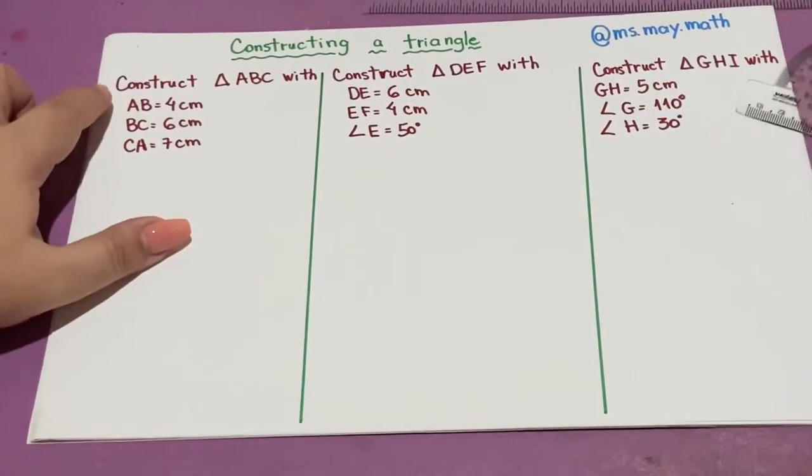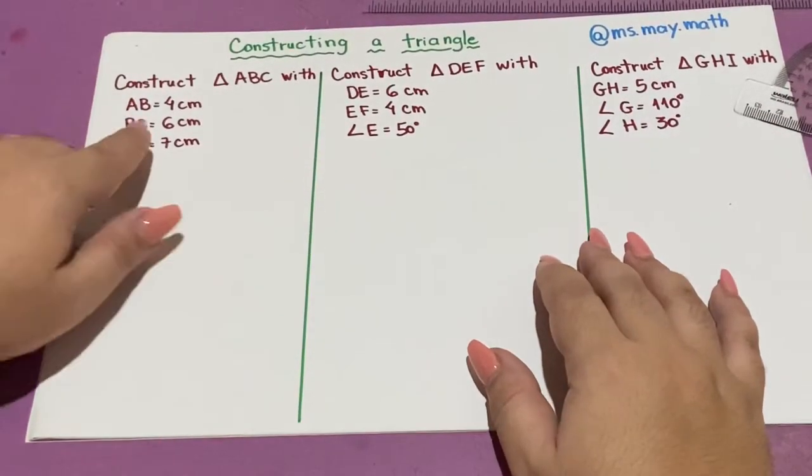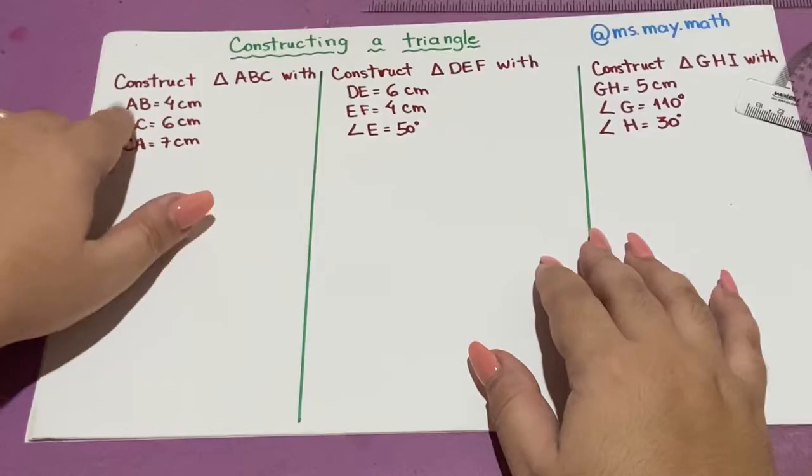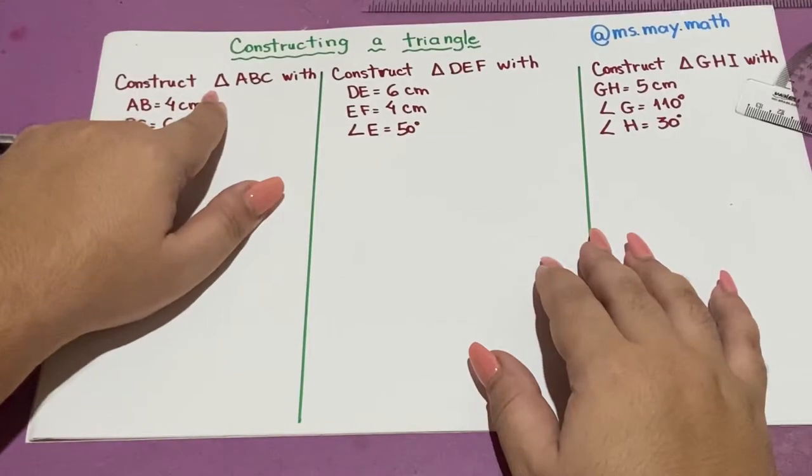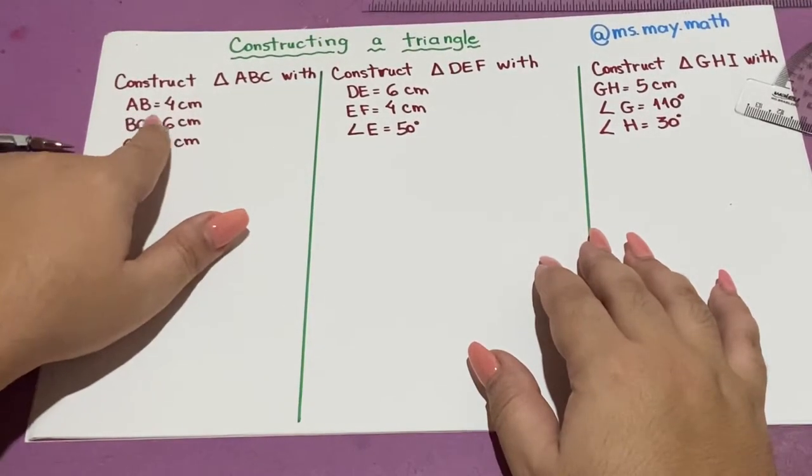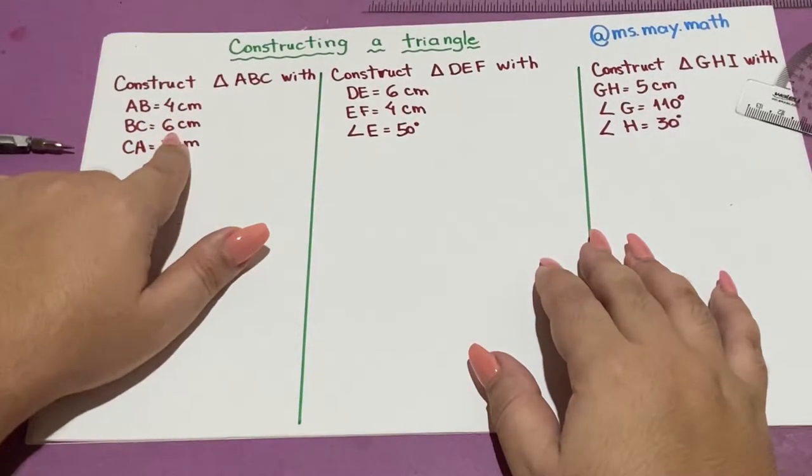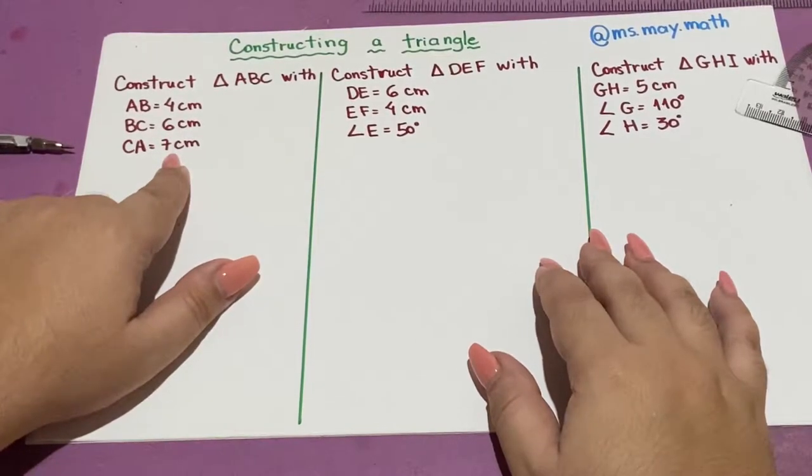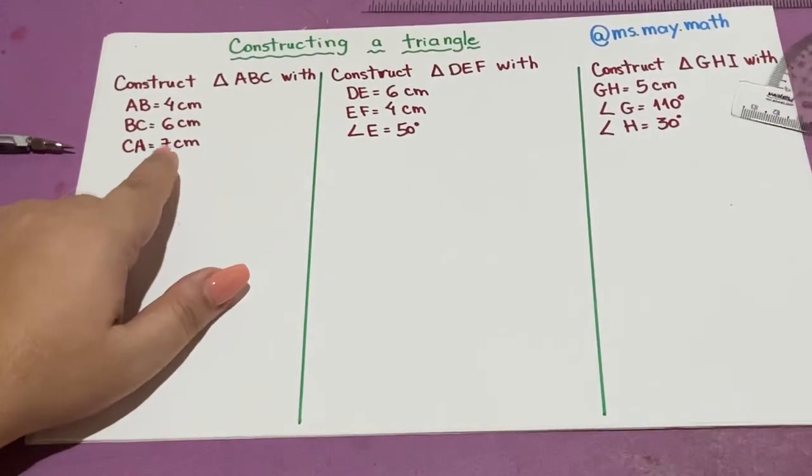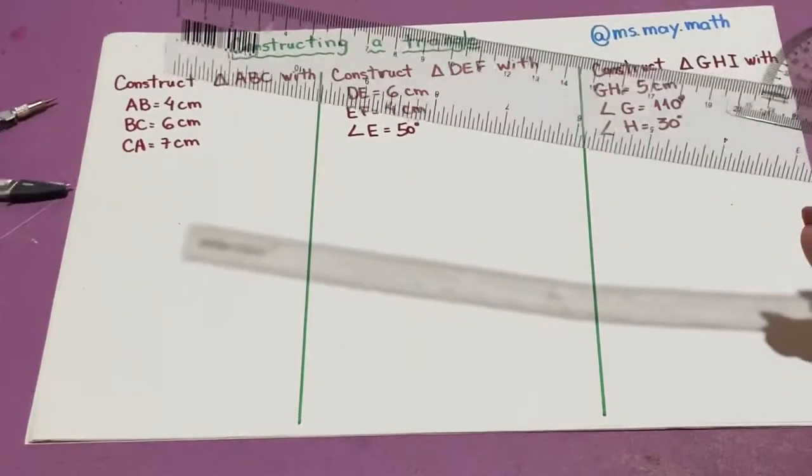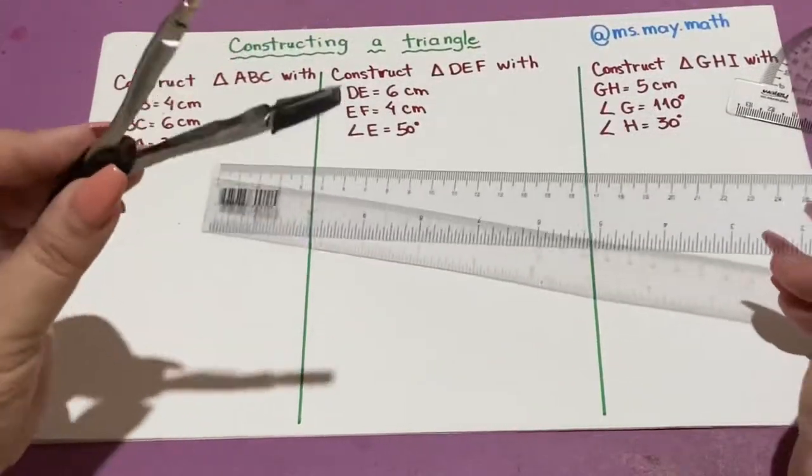The first one is when you have the three sides given. In this case, I have to construct a triangle ABC with the sides 4 centimeters, 6 centimeters, and 7 centimeters. For this case, we are going to use just a ruler and a compass.